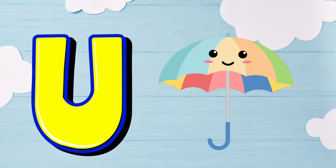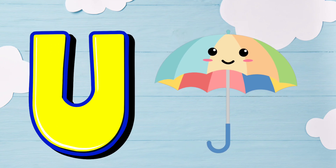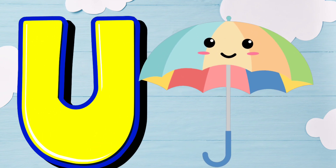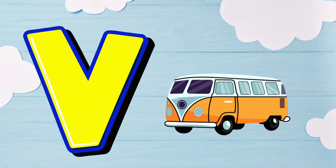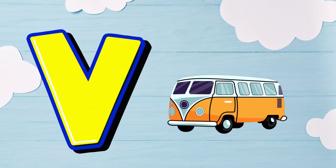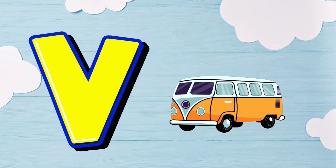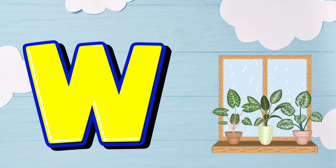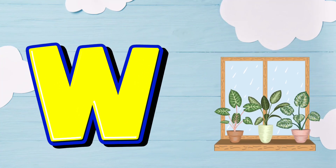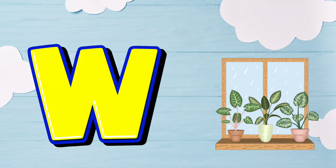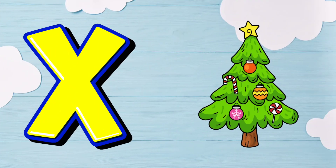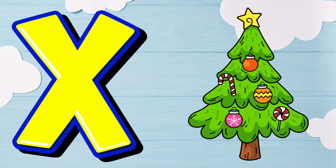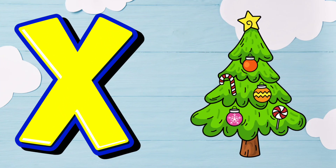U is for Umbrella. U. Umbrella. V is for Van. V. Van. W is for Window. W. Window. X is for Xmas. X. Xmas.